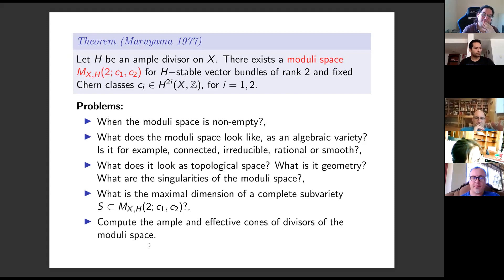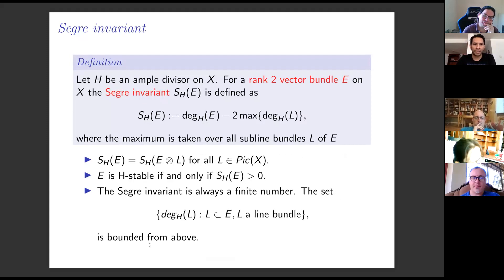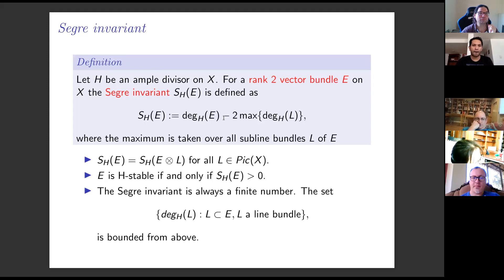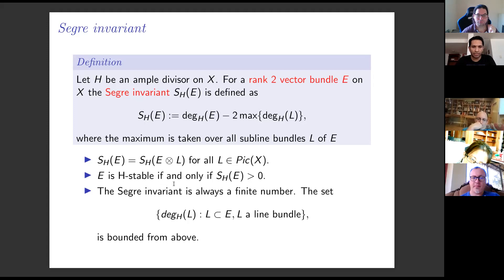In order to get topological and geometric properties of the moduli space, we have extended the concept of the Segre invariant for vector bundles on curves to rank two vector bundles on surfaces. For a rank two vector bundle, the Segre invariant is defined as the difference between the degree of the vector bundle and two times the maximum degree of all sub-line bundles of E. Informally, the Segre invariant is a measure of stability — a low value indicates a sub-line bundle of large degree. The term 'invariant' is used because it does not change under tensor product with line bundles. A vector bundle is stable if and only if the Segre invariant is greater than zero. The Segre invariant is a finite number because the degree of all sub-line bundles is bounded.